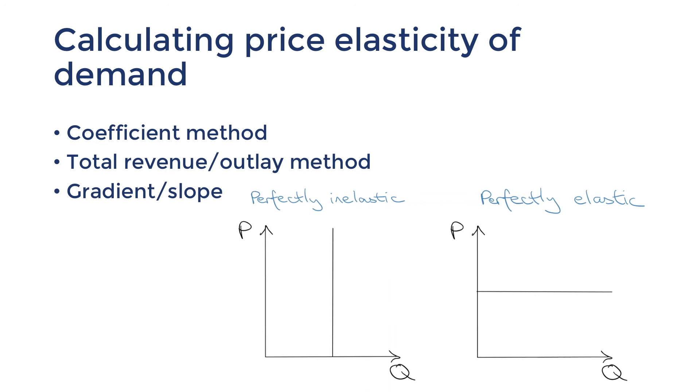If one producer tries to increase their price demand for them would drop straight to zero. If they try to lower their price every other producer would do the same. So price is pretty much fixed for this market. The way that I remember the difference between the two is that when the curve is steeper and more vertical it's like the letter I and I stands for inelastic.